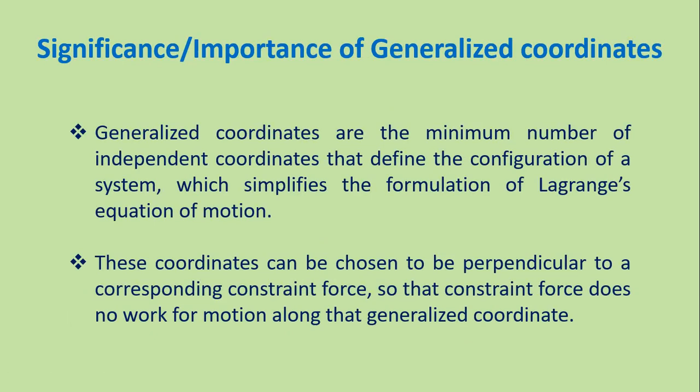The main importance of generalized coordinates is that they are the minimum number of independent coordinates that define the configuration of a system, which simplifies the formulation of the Lagrange equation of motion. If we want to find the equation of motion of a particle using the Newtonian method it may be difficult, but using the Lagrange equation of motion it will be easier — and to use the Lagrange equation of motion, we need generalized coordinates.